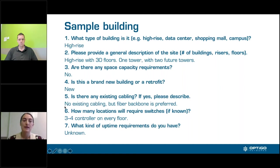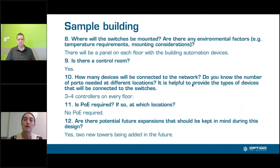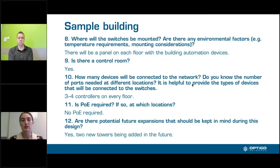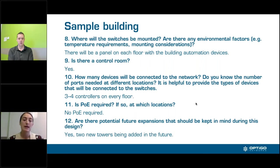This is a brand new building with no existing cabling. The customer has requested a fiber backbone. They require three to four controllers on every floor, don't know their uptime requirements, and there will be a panel on every floor for building automation devices. This is a building automation customer putting in a network for the first time. There is a control room, and really all they knew was three to four controllers on every floor. There are no PoE requirements, and in the future there will be two more towers.